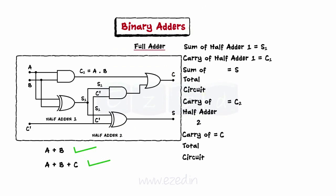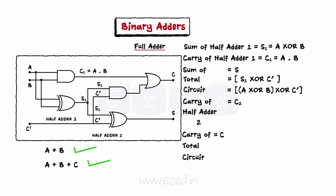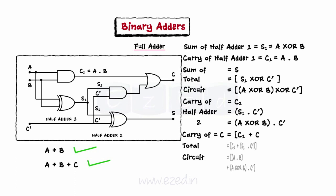Hence we can write: S1 equals A XOR B; C1 equals A dot B; S equals S1 XOR C', which is equal to A XOR B dot C'; and total carry is calculated as C equals C1 plus C2.